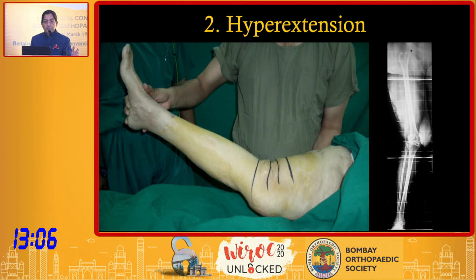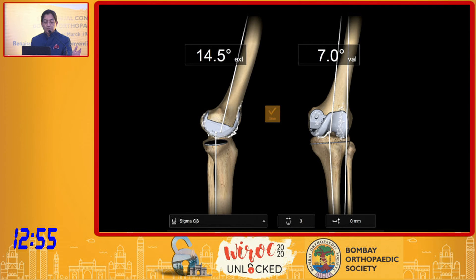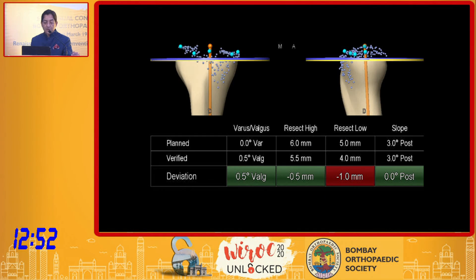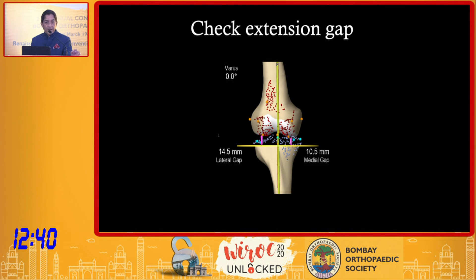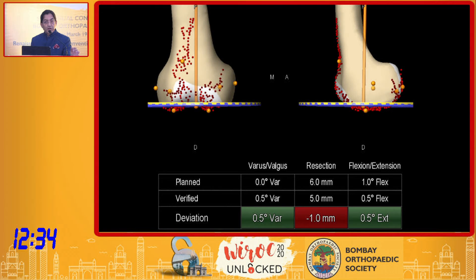Hyperextension is again a very difficult deformity. Make sure you rule out a neurological problem first, as if present you may need to use a hinge. Assuming no neurological problem — as in this case with 14 degrees of hyperextension with valgus — the key is to cut less on the tibia: do not take the standard 8 mm cut; take much less, maybe even 5 mm. Check your extension gap to see whether you can tighten it up, and also resect less on the distal femur — typically 5 or 6 mm, or even less if the hyperextension is more severe.